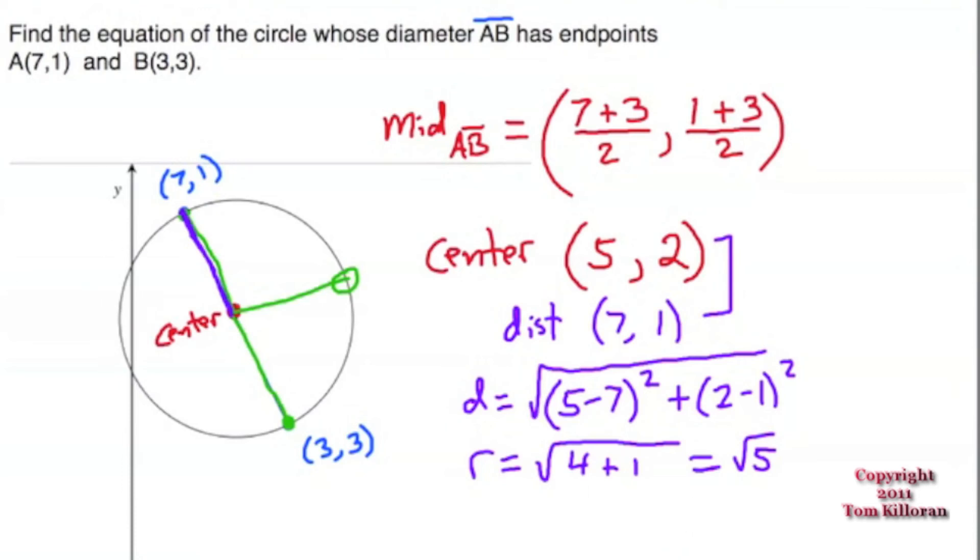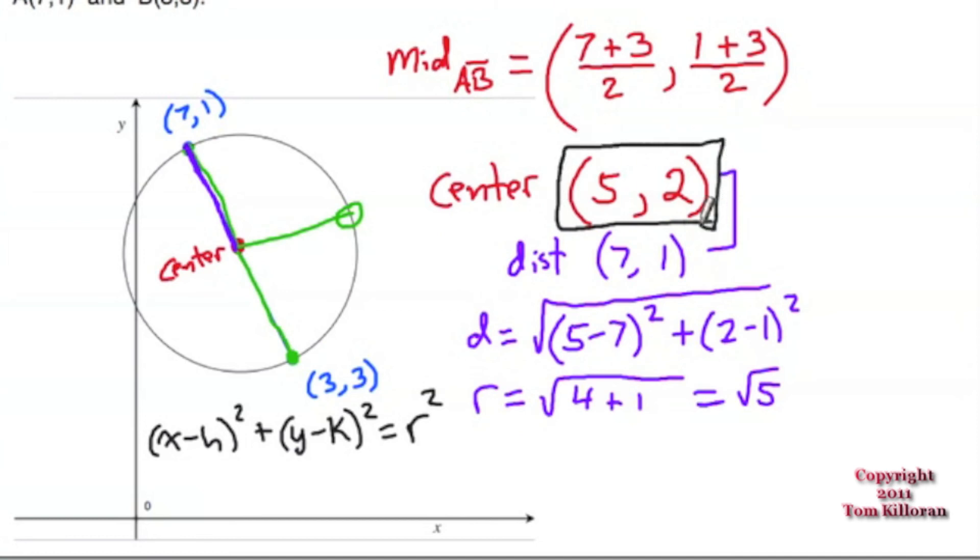Lastly, we could do the equation of the circle. The equation of the circle is (x - h)² + (y - k)² = r². If I plug in all my information - remember, we have to go back to the center point. The center is going to be the point that we plug in for h and k. We're going to get x minus h, in this case would be 5, squared, plus y minus k, in this case 2, squared. And r² is square root of 5 squared, better known as just 5. So the answer to this problem is the equation of the circle is (x - 5)² + (y - 2)² = 5. That's the equation of the circle whose diameter has endpoints A(7,1) and B(3,3).